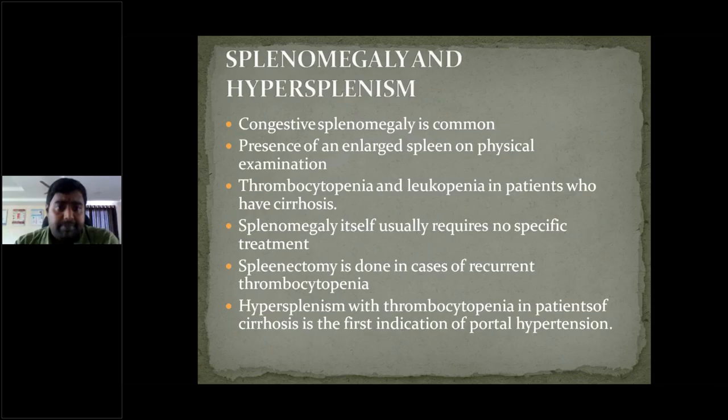Congestive splenomegaly is common in cirrhosis. The enlarged spleen is found on physical examination and routine blood investigations show thrombocytopenia and leukopenia. Splenomegaly usually requires no specific treatment. If there is increased portal hypertension, non-selective beta-blockers are used, and splenectomy is done if there are recurrent thrombocytopenia and bleeding tendencies. Hypersplenism with thrombocytopenia is the first indication of portal hypertension.